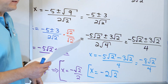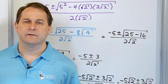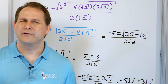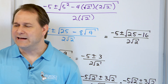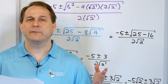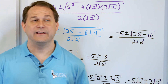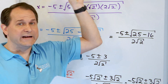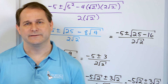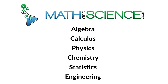So in this lesson we did the quadratic formula where we had coefficients that were square roots — a kind of weird case. In the next lesson, which will be the last lesson on the quadratic formula, we'll have equations where we actually have the imaginary number i as a coefficient. I'll show you how to handle that in the next lesson at mathandscience.com.